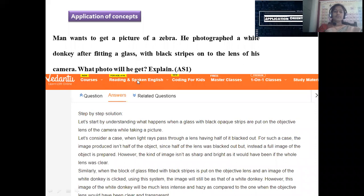One of the application-based concepts is going to be discussed now. A man wants to get the picture of zebra. He photographed a white donkey after fitting a glass with black stripes onto the lens of the camera. What photo will he get? Explain. So here, application-based concept it is. Initially, he wants to take the photo of zebra. Before going to take the photo of zebra, he just captured this white donkey picture. So after setting all the things, white donkey picture was taken. What will be the photo? What is the condition for that photo, what he captured? This is the data collected from Vedantu.